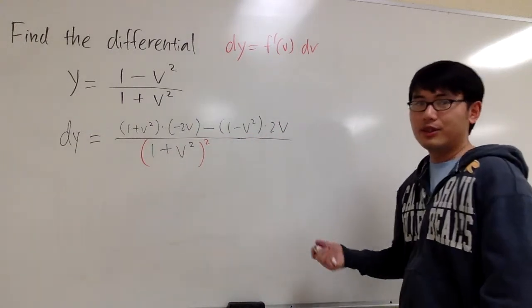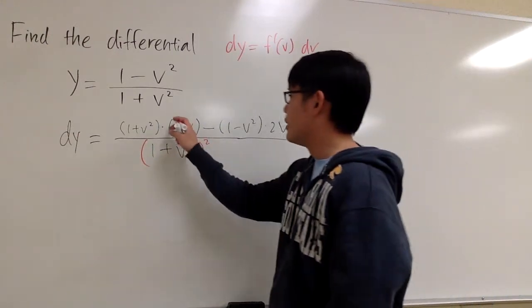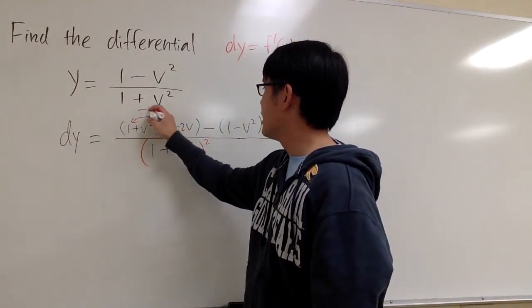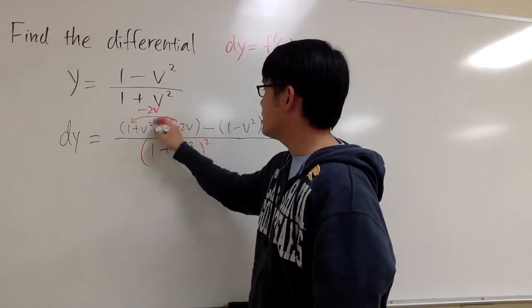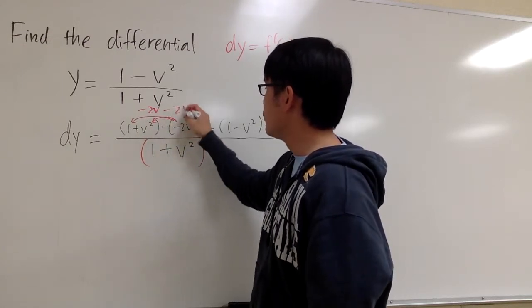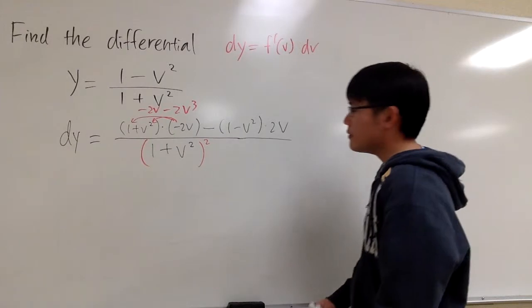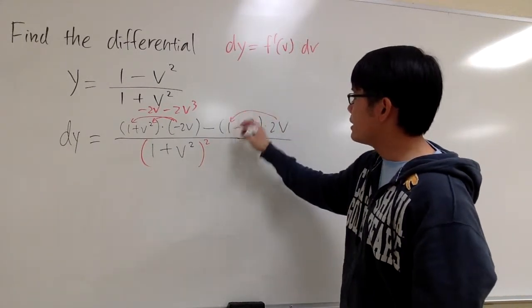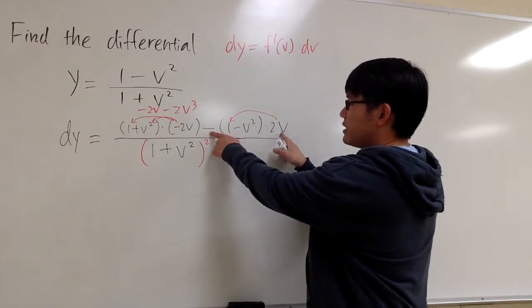And the rest is just the cleanup. So if you distribute this, this times that, you get negative 2v. This times this, you get negative 2v to the third power. And for the second part, be really careful. When you distribute this, make sure you also take the negative sign into consideration.